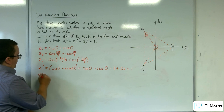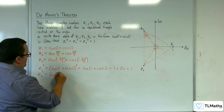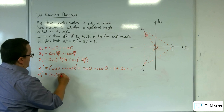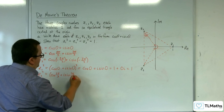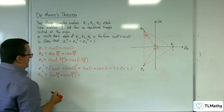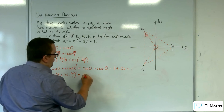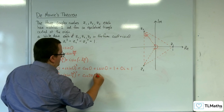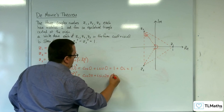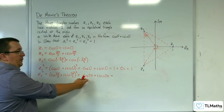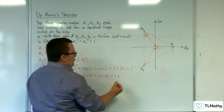So Z2 cubed is cosine of 2π/3 plus i sine of 2π/3, all cubed. The 3 is going to multiply with the 2π/3, so you get cosine of 2π plus i sine of 2π. Cosine of 2π is 1 and sine of 2π is 0.